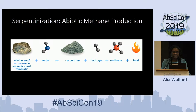Another way we can produce methane is through serpentinization, or abiotic methane production. In this case, oceanic crust minerals such as olivine and pyroxene react with water, creating serpentine, and as a byproduct you get hydrogen, methane, and heat — making it a low temperature, low pressure exothermic reaction.